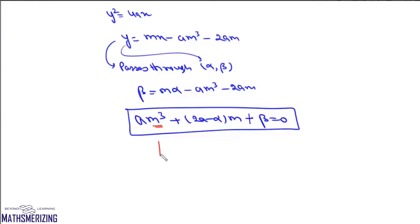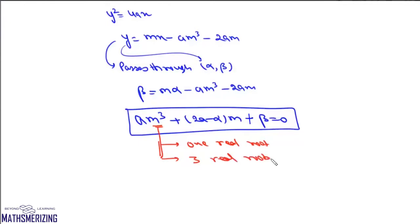And if we have a cubic equation, we have two possibilities: either it will have one real root, or it will have three real roots. So that means from any point, either one normal can be drawn or three normals can be drawn to a parabola. So there'll be many questions where we'll be using this cubic equation to find the relationship between slopes of three normals that can be drawn from a point to a given parabola.